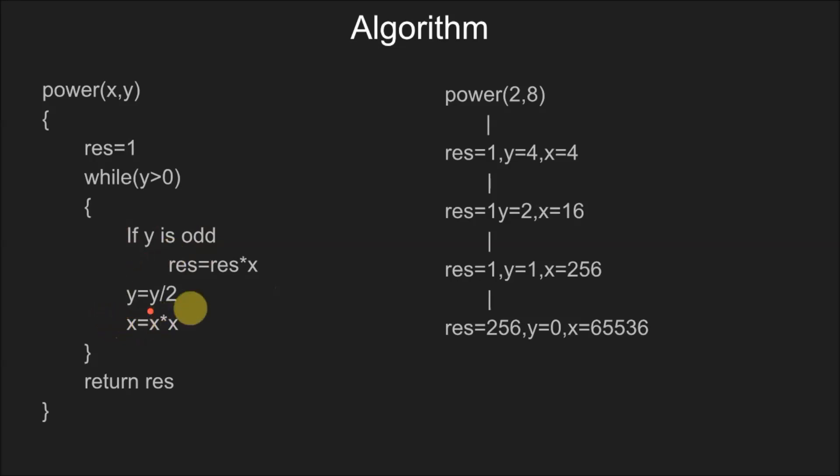Then we update the value of y with y divided by 2 and x with x squared, and after this loop ends we return result.